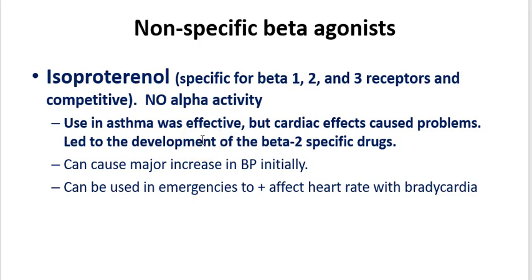Other classic pressor agents are your nonspecific beta agonists. The classic example is isoproterenol, which is specific for all the beta receptors — beta-1, 2, and 3 — and has virtually no alpha activity. We used to use isoproterenol for asthma because of the beta-2 effect, but the cardiac effects caused lots of problems, leading to the development of beta-2-specific agonists such as salmeterol and albuterol. We typically use isoproterenol in emergencies to positively affect heart rates in cases of severe bradycardia.